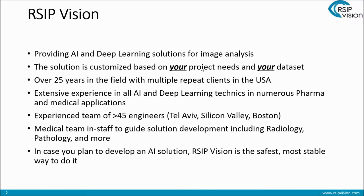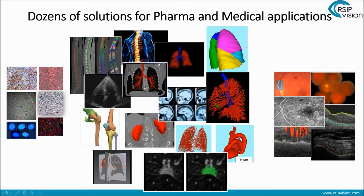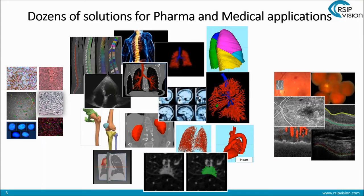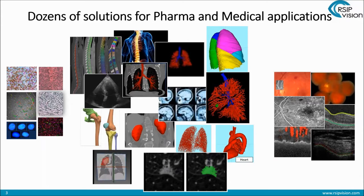The bottom line is that in case you plan to develop an AI solution, RSIP Vision is the safest, most stable way to do that. We've done dozens of solutions for pharma and medical applications over the years. As you can see, we've touched upon pretty much every modality out there, whether it is CT, MRI, X-ray, ultrasound, OCT, pathology, and microscopy. And we've also dealt with pretty much every organ in the body and most of the cell and tissue types out there.